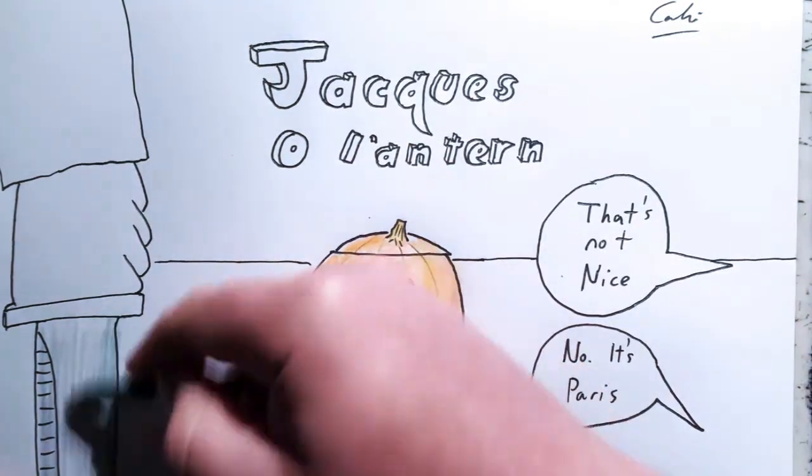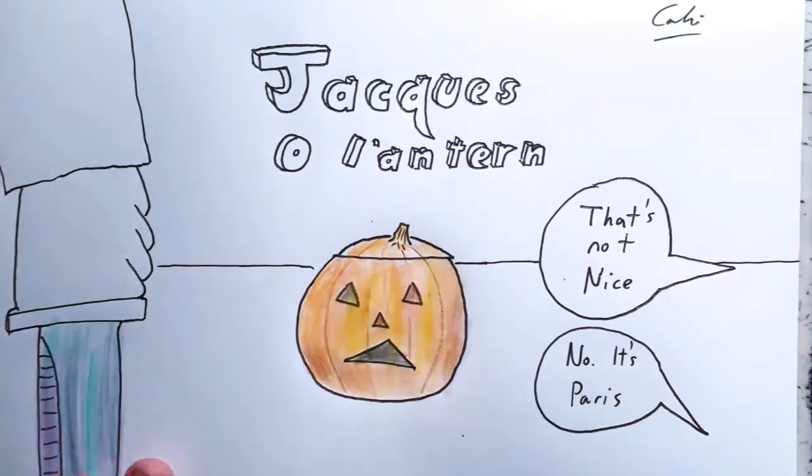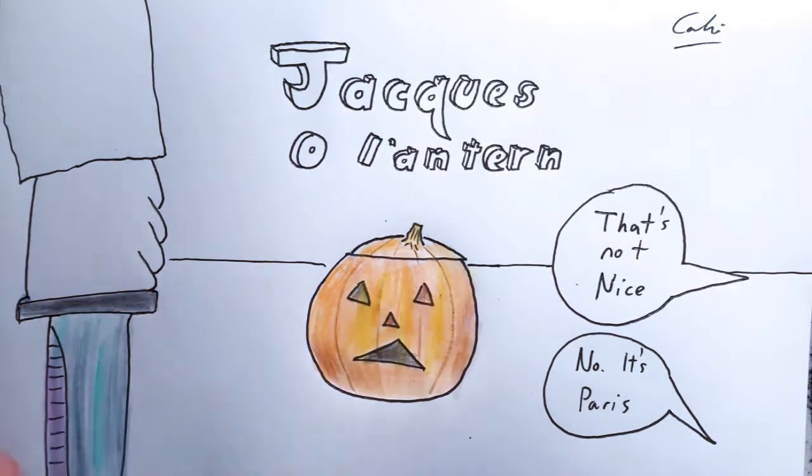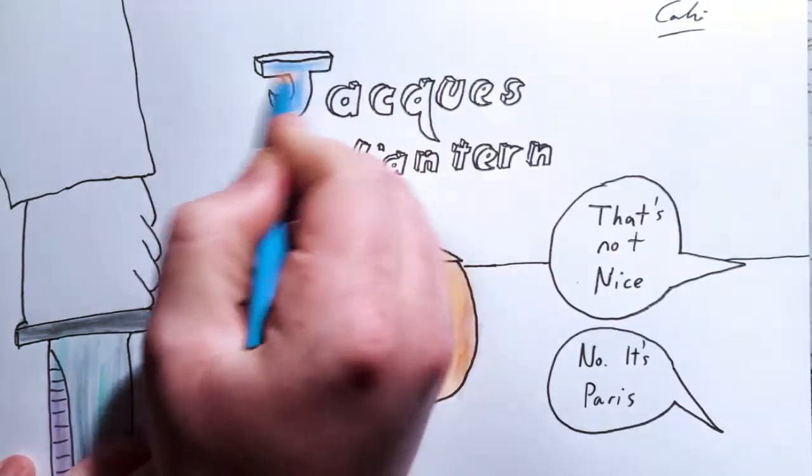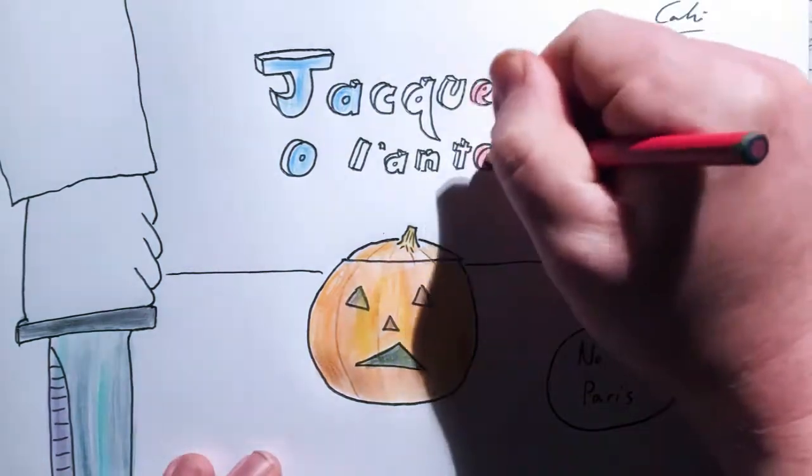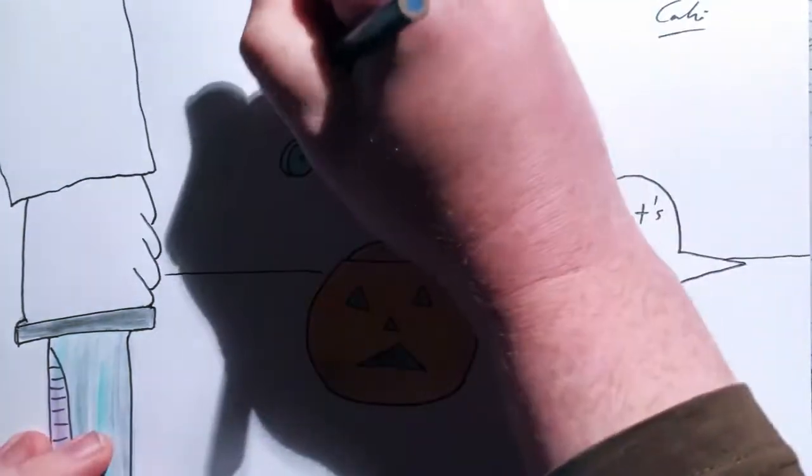The fire earlier this year at Nantes Cathedral for instance was portrayed by many outlets as a tragic accident which it 100% wasn't. There's a level of denial and complicity at play here akin to when the Titanic hit the iceberg and many people's reaction was to add some of the ice to their gin and tonic.